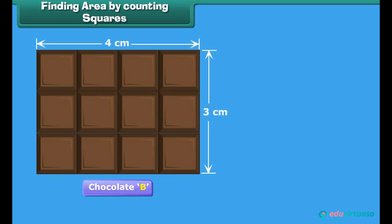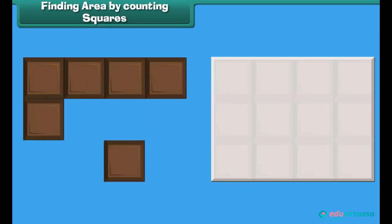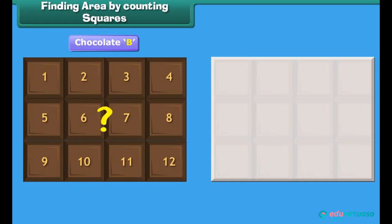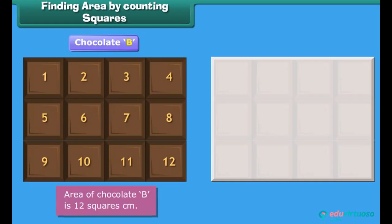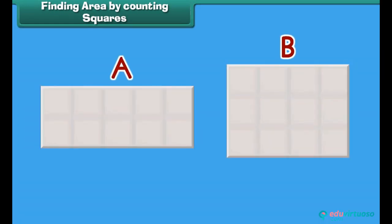Now let us find the area of chocolate B. The length of chocolate B is four centimeters and its width is three centimeters. Four squares can be arranged along its length and three squares along its width. In total, twelve squares can be arranged on this chocolate. Its area is twelve square centimeters. So among chocolates A and B, chocolate B is bigger in size.